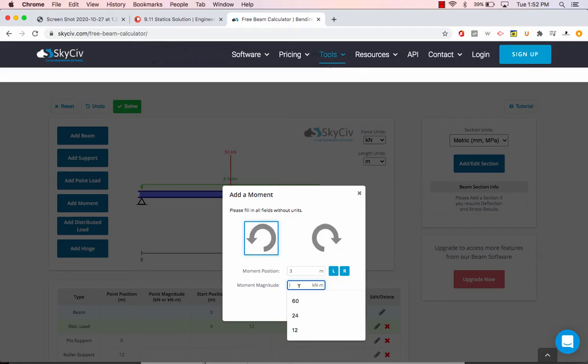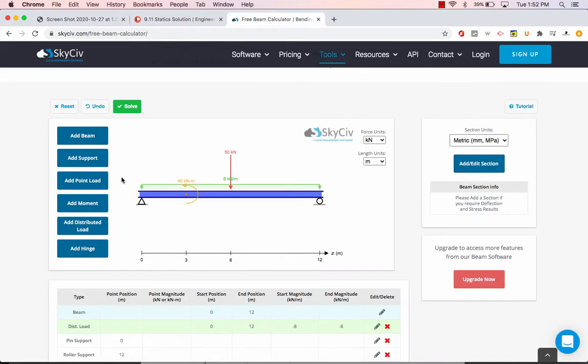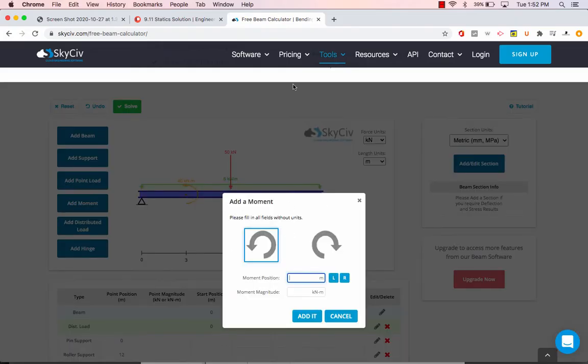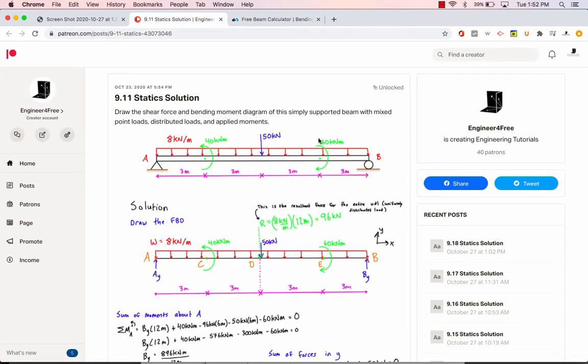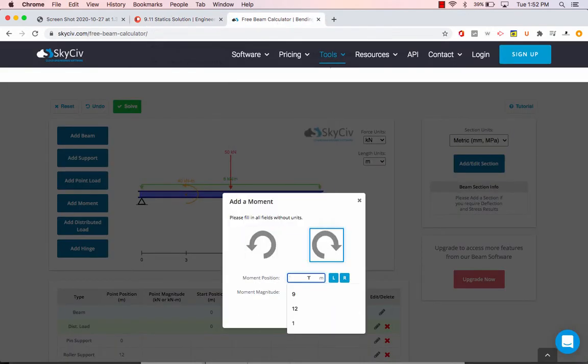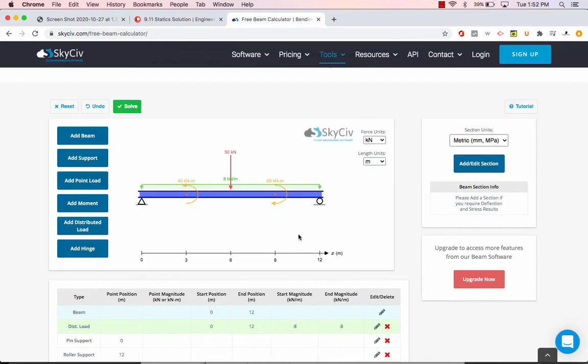Then we have to add in one more moment. It was at 9 meters and it's 60 kilonewtons clockwise. So clockwise, its location is 9 meters and it's 60 kilonewton meters. That's all we have. That's the whole problem. All you have to do now is just hit solve.